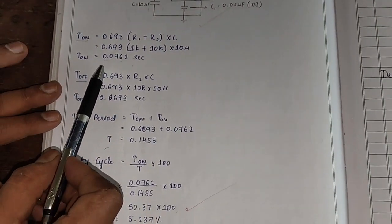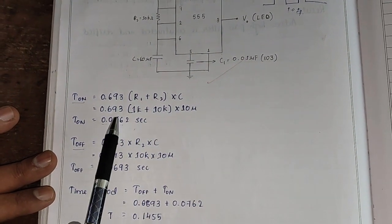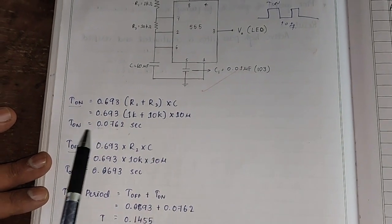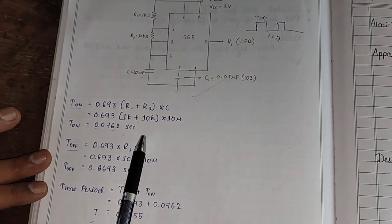In this formula, we can see that the T on is given by this formula. Once we substitute the value of R1, R2, and C, we will get the value of T on as 0.076 seconds.